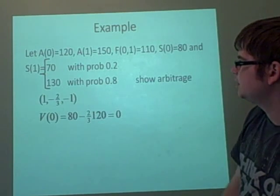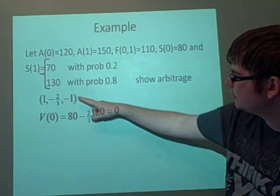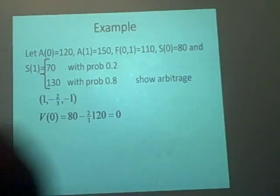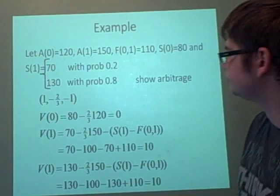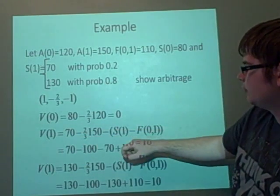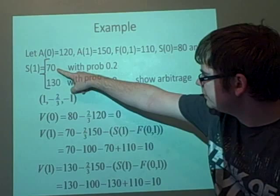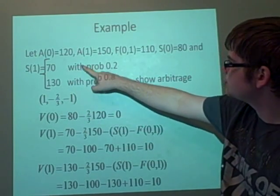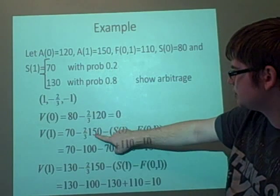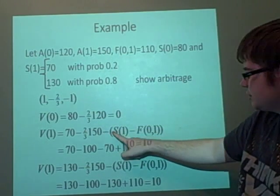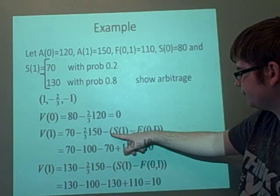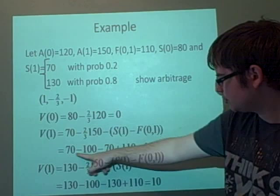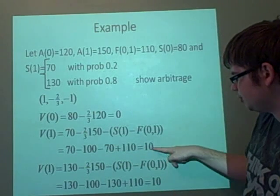Now what we want to do is put in what we've got here into here. So the wealth at time one will equal 70 because we've got one stock minus two-thirds of what it goes up to, which is 150, minus - now we've got this equation here, the forward contract part, which if you do the sums will give you 10. So we're going to make 10 pounds on this one.